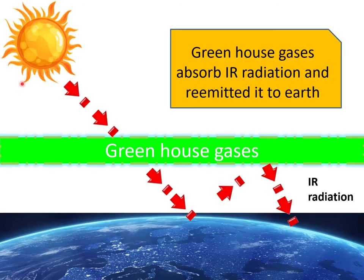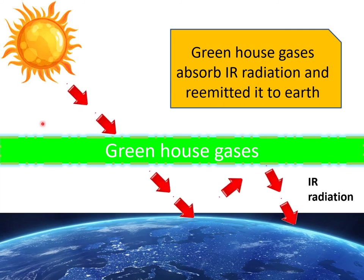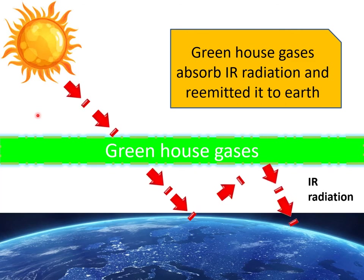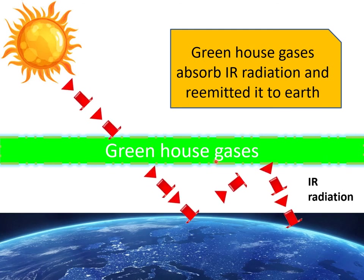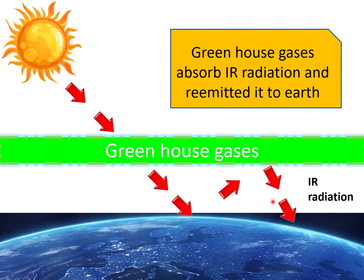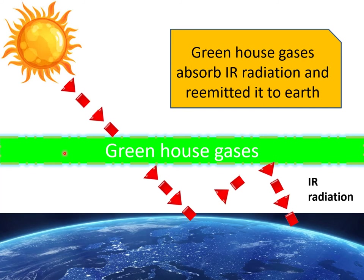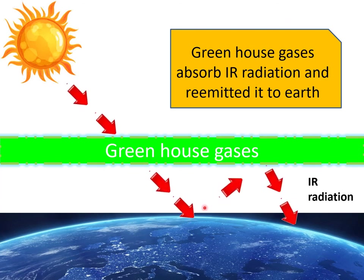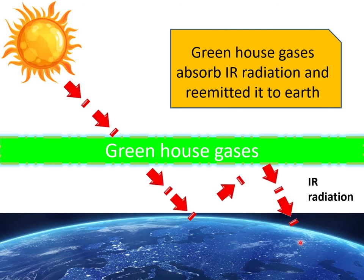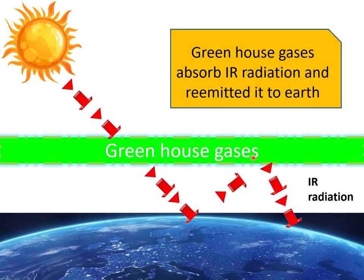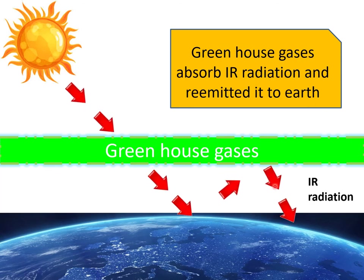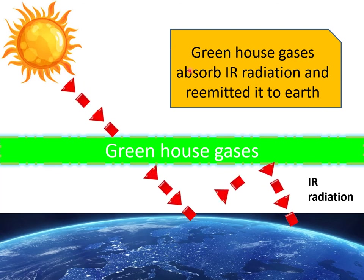In the atmosphere, greenhouse gases trap the IR radiation through the greenhouse effect. The earth's surface retains energy because greenhouse gases absorb and re-emit the infrared radiation back toward the earth. That is why the earth remains warm.